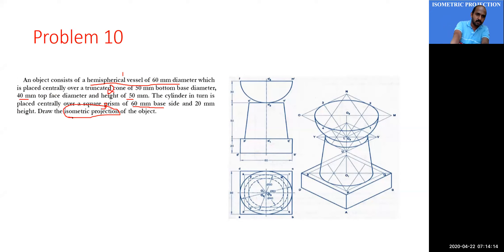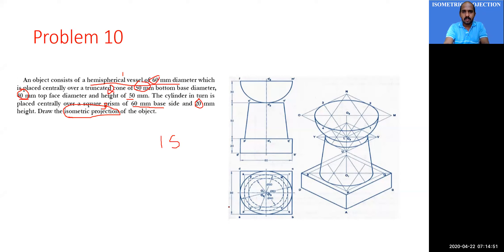Since this is an isometric projection, you need to draw the isometric scale. Mark all dimensions on it: 60, 50, 40, and 20. The front view and top view show three solids. The bottom solid is a square prism with base equal to 60 and height equal to 20.